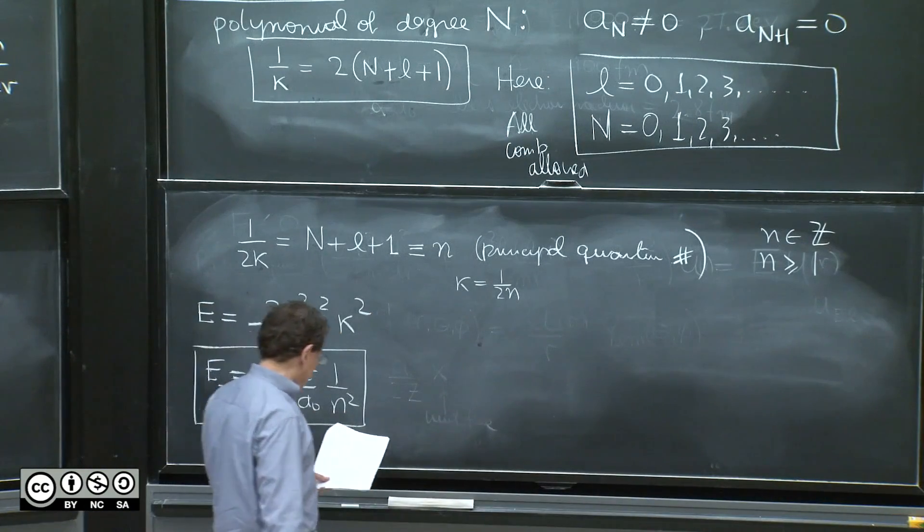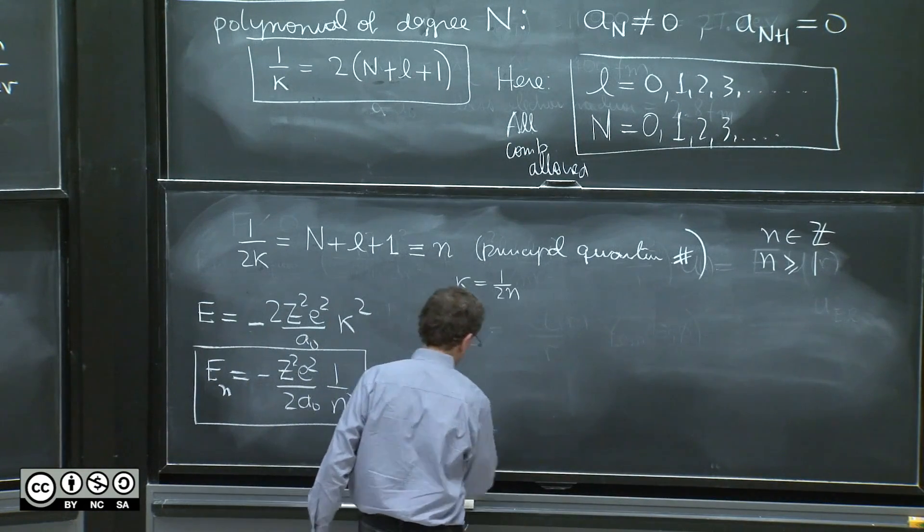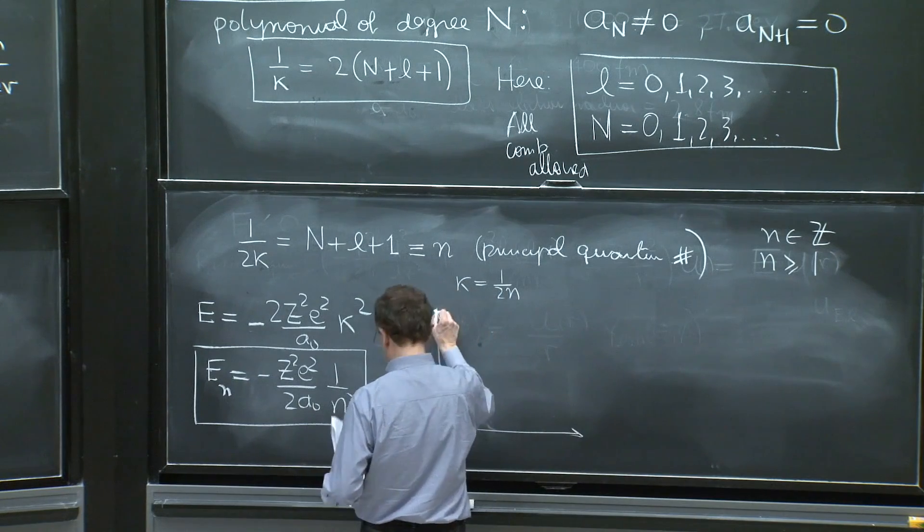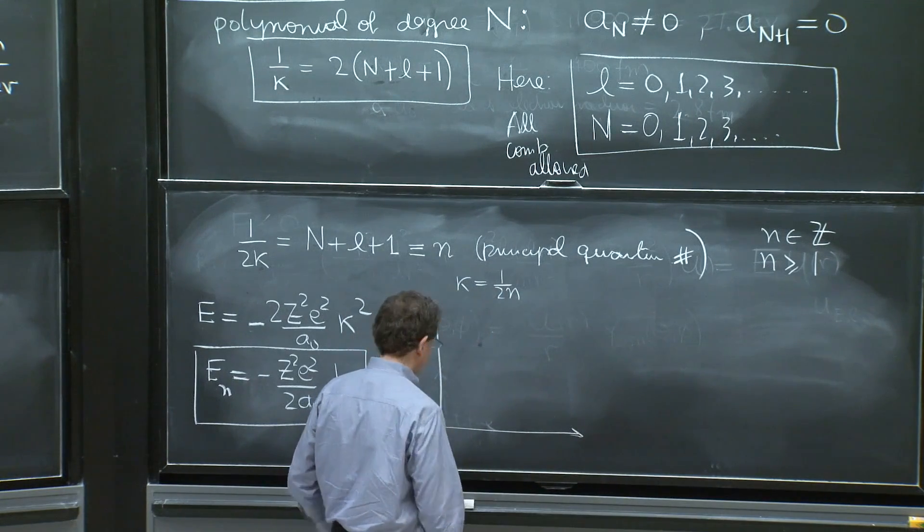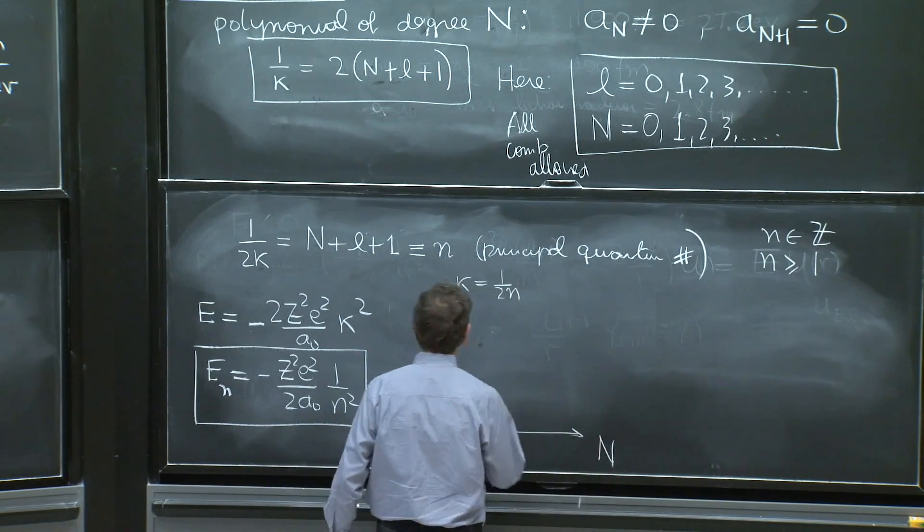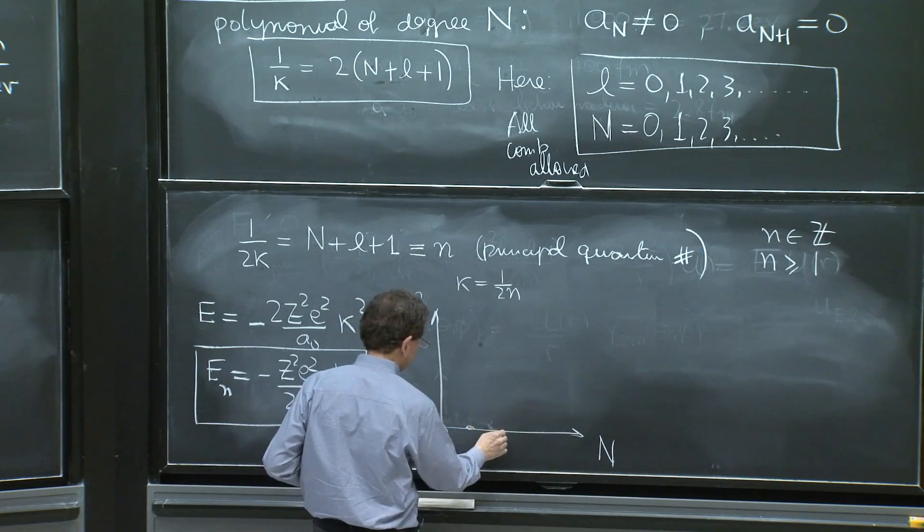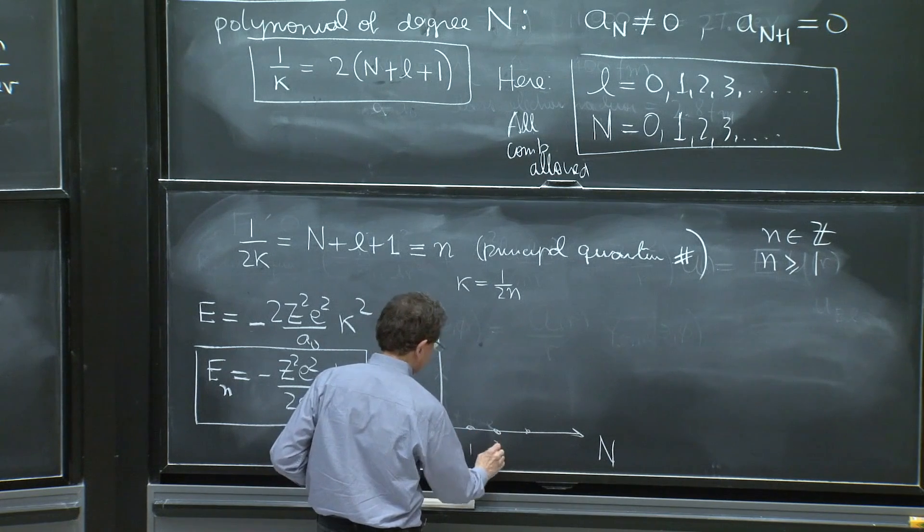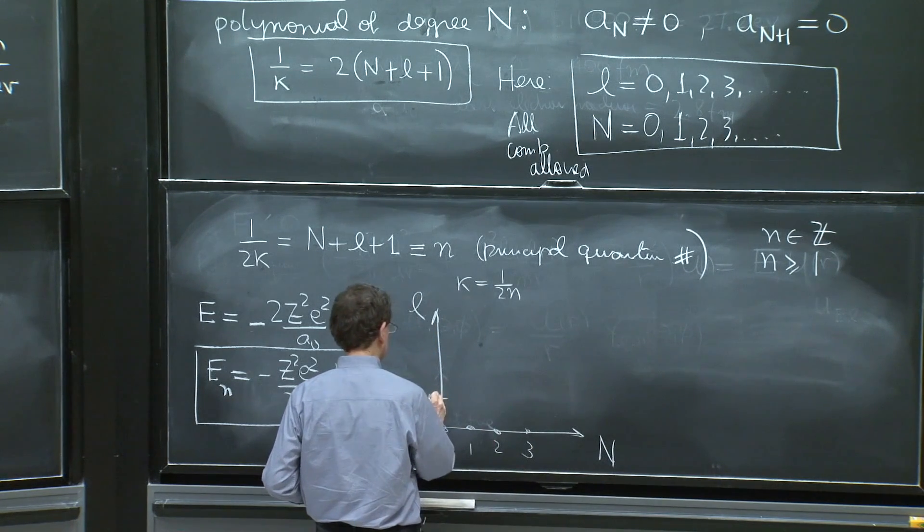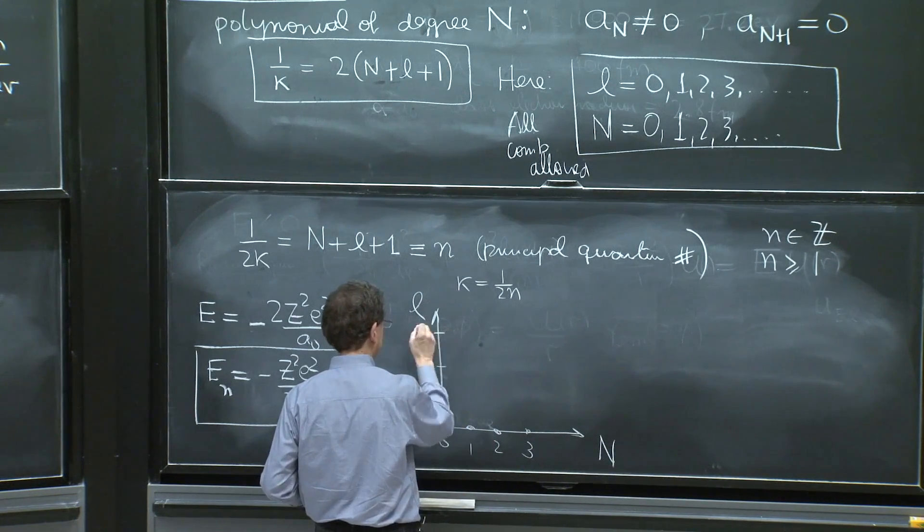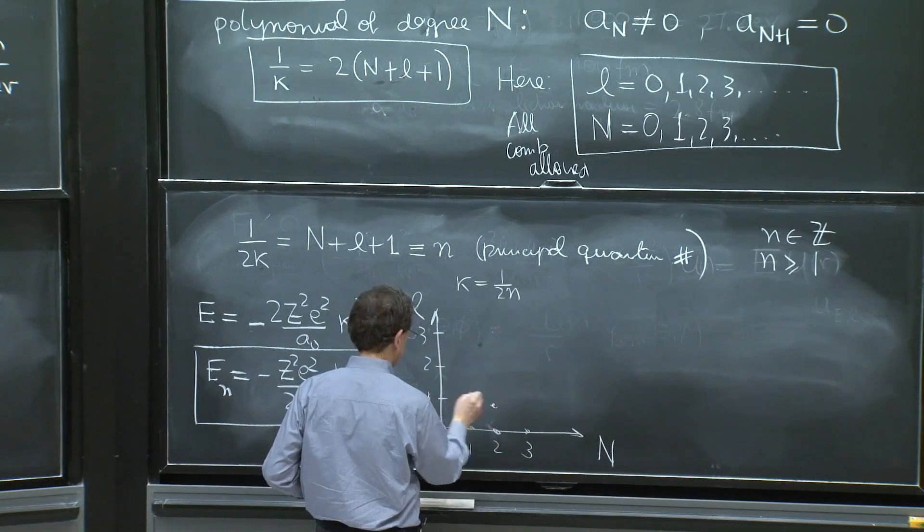The solutions can be organized. One way to do it is not the standard way. It's with plotting n here and l here. And you have 0, 1, 2, 3, 1, 2, 3. You have all these points.